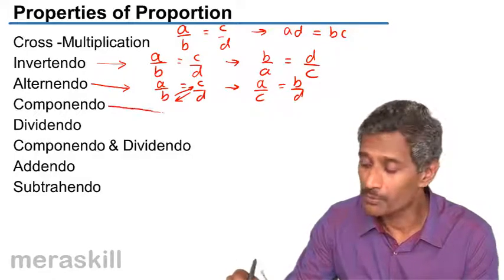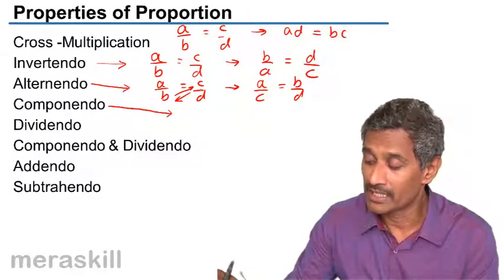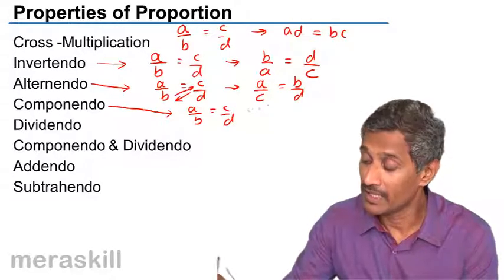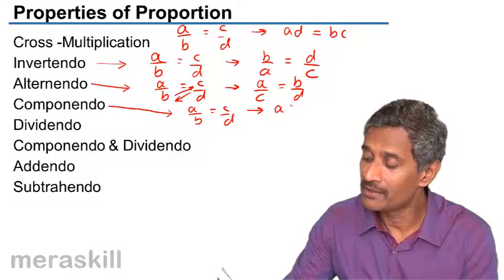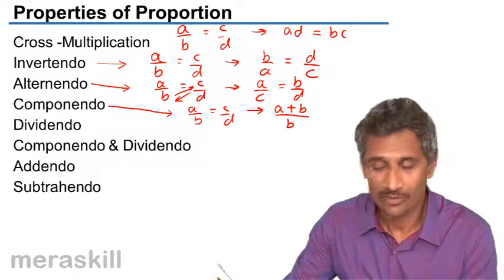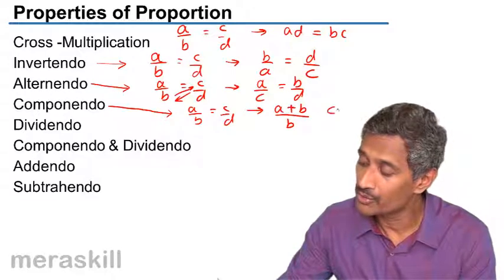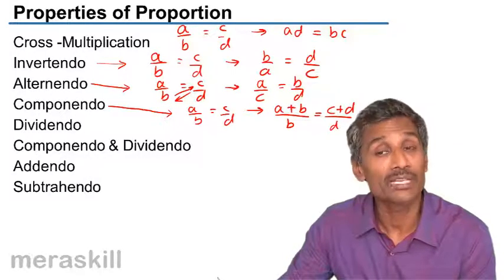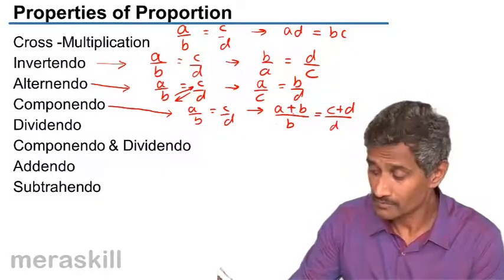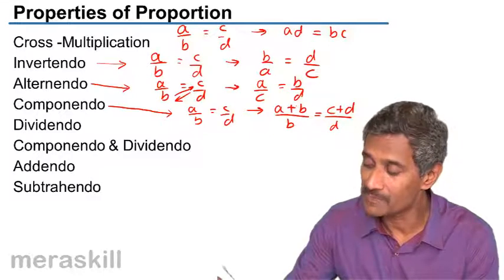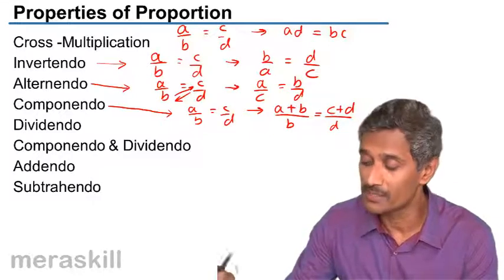Then we have componendo rule. That is, if A by B is equal to C by D, then you add the consequent: A plus B upon B, and you do the same to the right hand side too. The new ratios obtained will also be equal. So if A by B is equal to C by D, A plus B upon B is also equal to C plus D upon D.